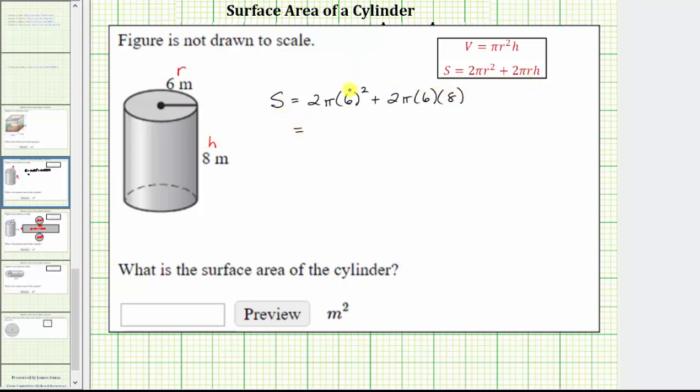Simplifying, 6 squared is equal to 36, 36 times 2 is 72, then we have times π, which gives us 72π, plus 2 times 6 is 12, times 8 is 96, times π gives us 96π. These are like terms, 72π plus 96π equals 168π, and the units, because it's a surface area, are square meters.